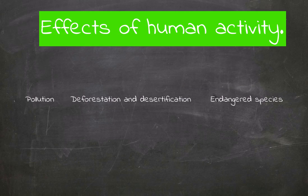There are three main effects of human activity: pollution, deforestation and desertification, and endangered species. Let's start with pollution.